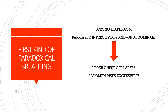In this type of paradoxical breathing, the diaphragm contracts, the abdomen rises excessively because of the flaccid abdominal muscle tone, and the upper chest collapses because of the lack of stabilizing contraction of the intercostal muscles. This is one of the more common forms of paradoxical breathing.